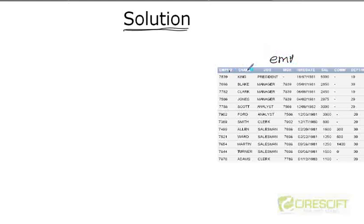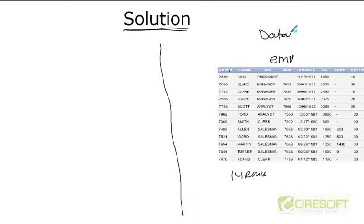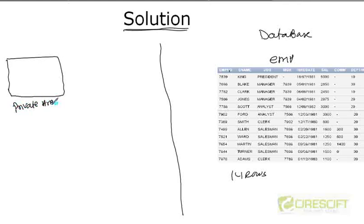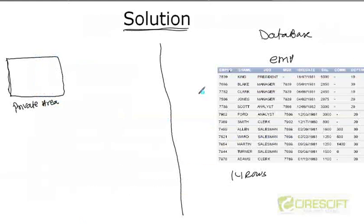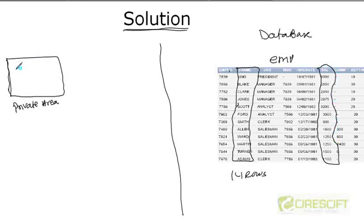Here is our employee table with employee name, employee number, job, and so on — 14 rows. What I do first is declare a private area where I can store data temporarily. Whatever your query is — in this case, SELECT ename, sal — I get these columns and bring them into this private area.